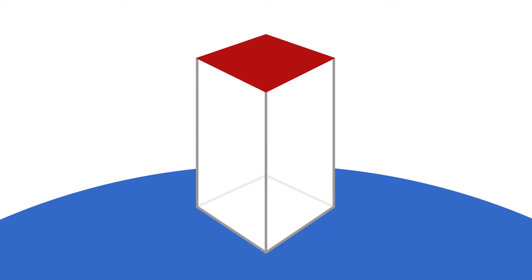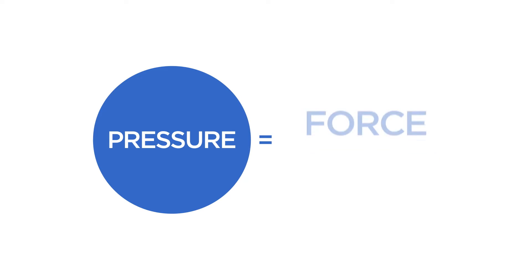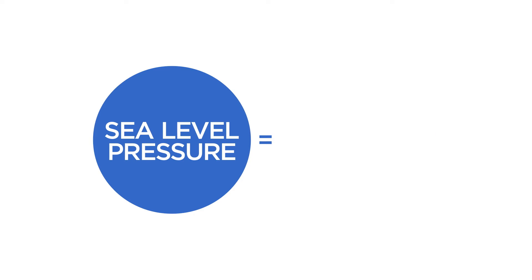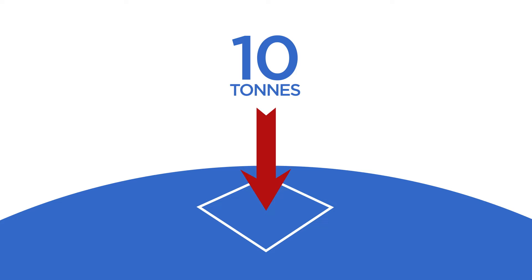Let's consider an imaginary column of atmosphere with a cross-sectional area of one square metre. The Earth's gravity field acts on the entire column of gases, giving it weight. Pressure is defined as being the force acting on each square metre of a surface. So the sea-level atmospheric pressure of around 100 kilopascals, or 1000 millibars, means that each square metre of ground at sea level is supporting the weight of about 10 tonnes of gases above it.